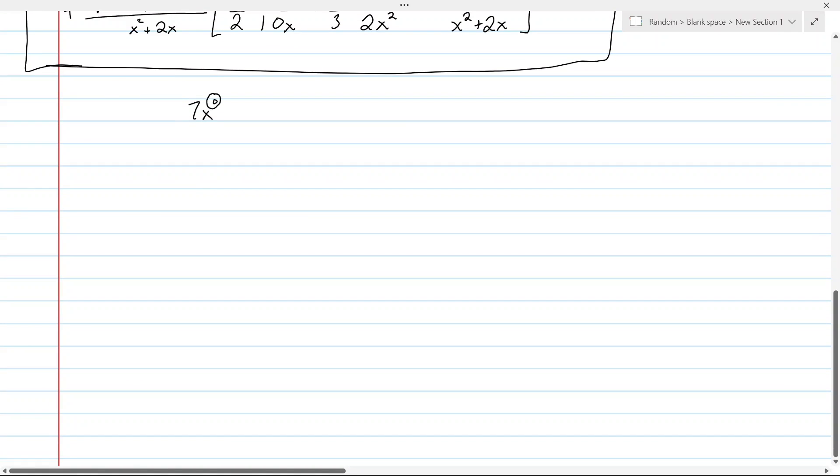The general formula looks something like this. Suppose I have a function. There's some constant k over here, times a function to the power of a, power of b, u to the power of c, w to the power of d, and so on.